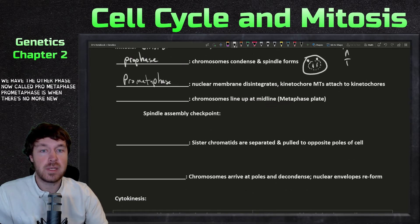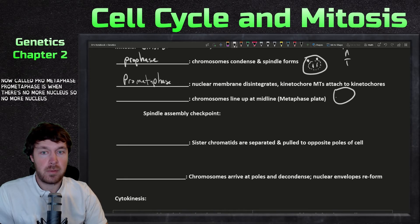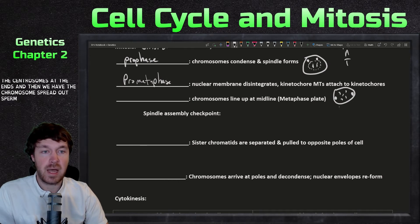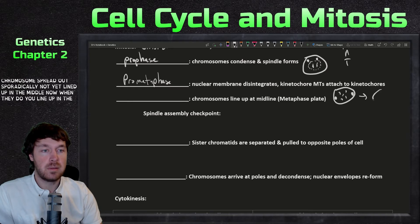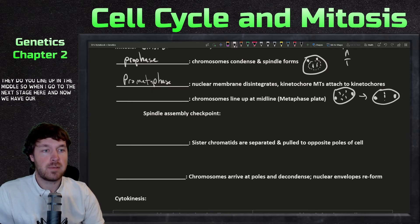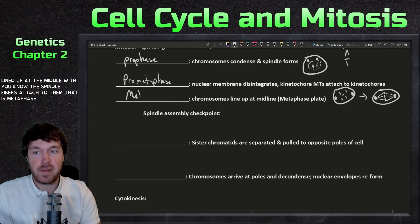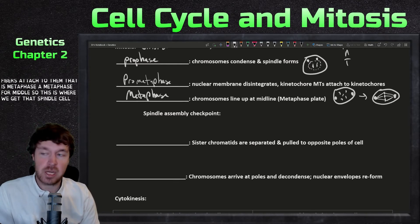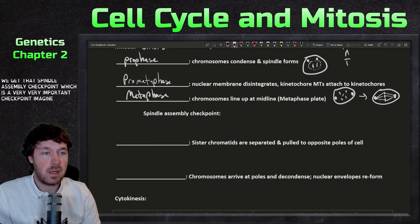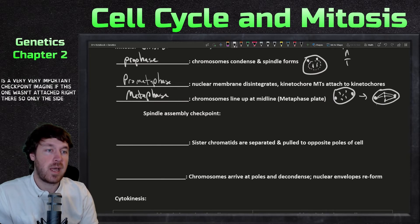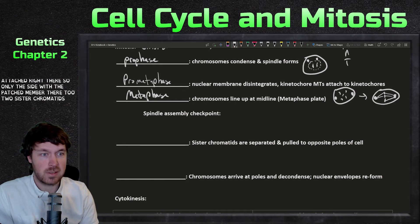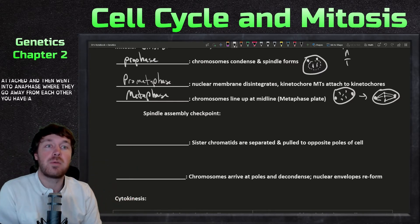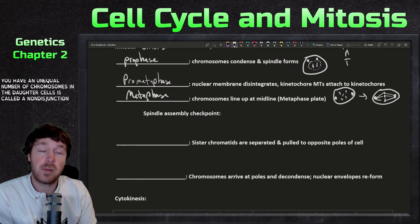Prometaphase is when the nuclear envelope breaks down. The centrosomes are now at the ends and the chromosomes are spread out sporadically, not yet lined up. In metaphase, the chromosomes line up at the middle with spindle fibers attached — this is where we reach the spindle assembly checkpoint. If even one kinetochore isn't attached, the cell won't pass this checkpoint, preventing an unequal number of chromosomes in daughter cells — a condition called non-disjunction.